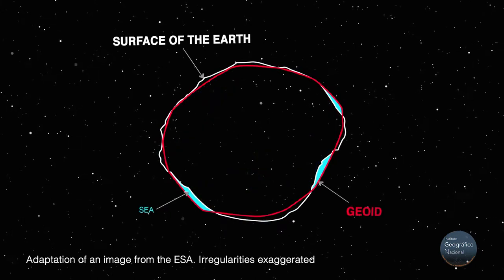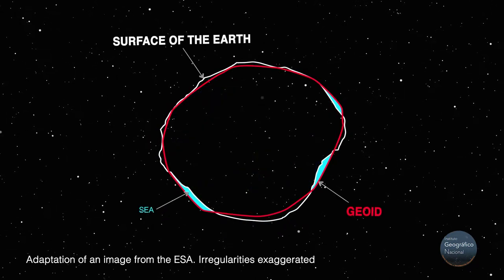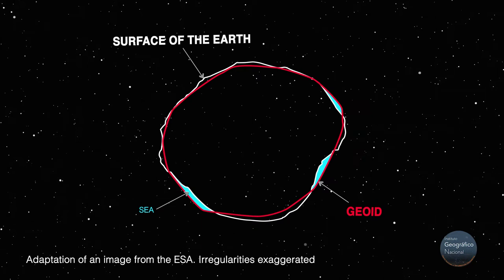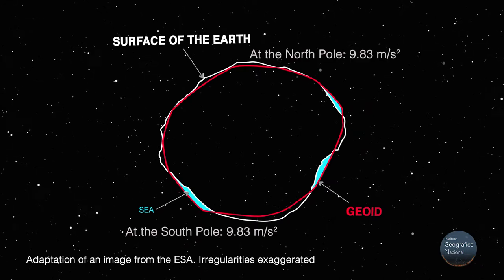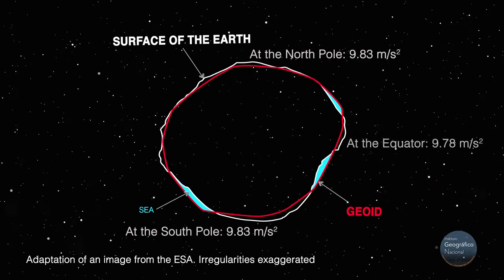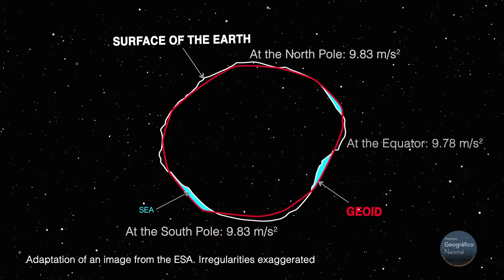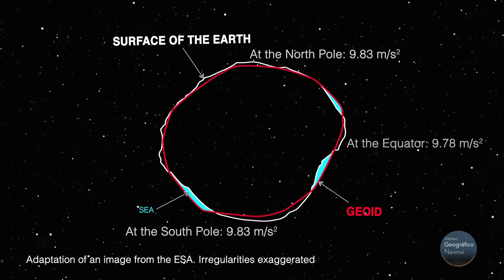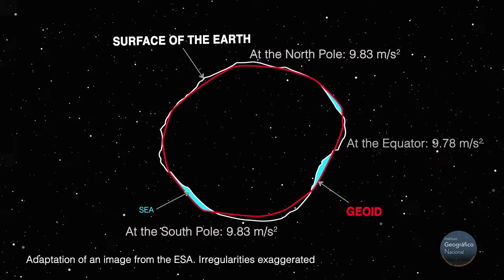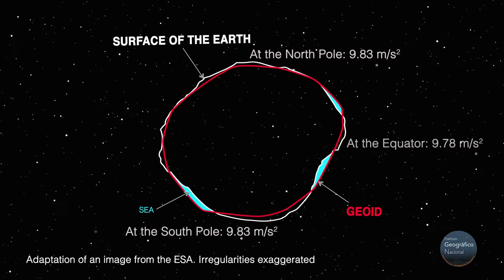It is easier to view it through a cross-section. But gravity is not the same everywhere, because the materials found within the Earth are not homogenous. In conclusion, the geoid is very complicated and not suitable for making maps.